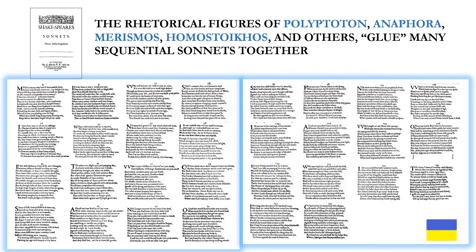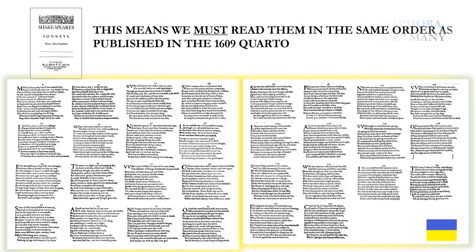The rhetorical figures of Polyptoton, Anaphora, Merismos, the newly coined Homostoekos, and others glue many sequential sonnets together. This means we must read them in the same order as published in the 1609 quarto.